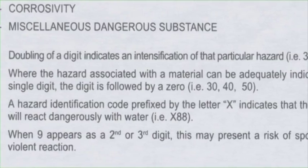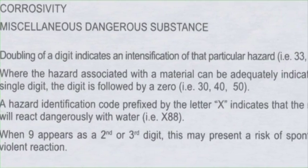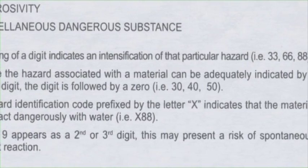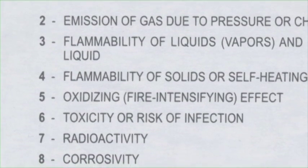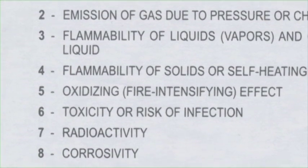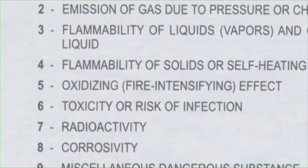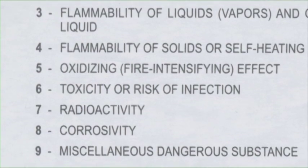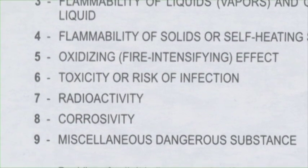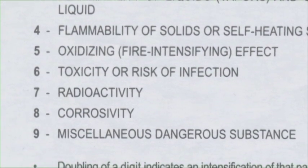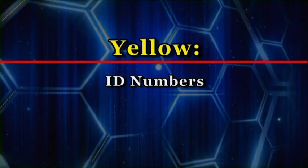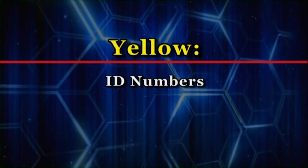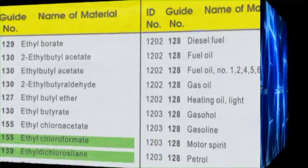These hazard identification codes provide a lot of important information. For instance, if you come across a two-digit number that is doubled — like 33 — it indicates a greater hazard. If a number is prefixed with an X, the substance will react with water. If a 9 is in the second or third digit, there is a risk of spontaneous violent reaction.